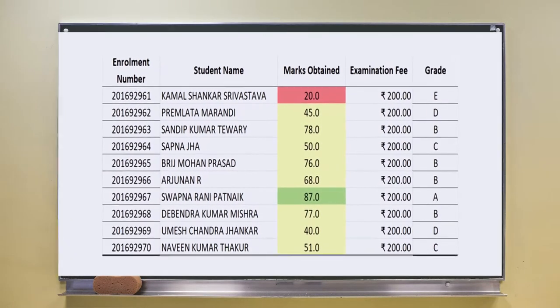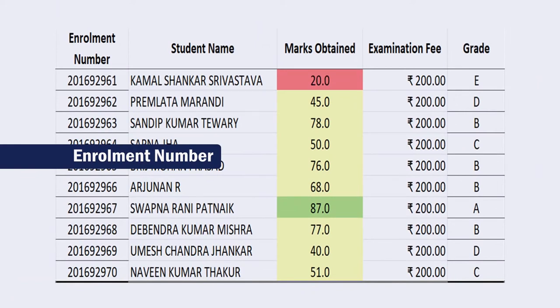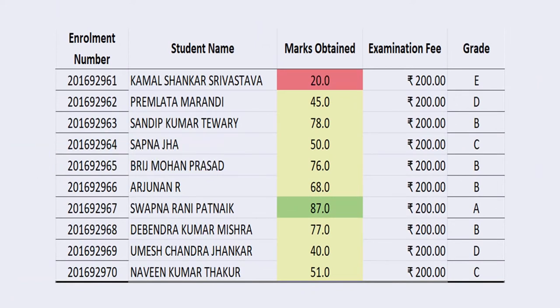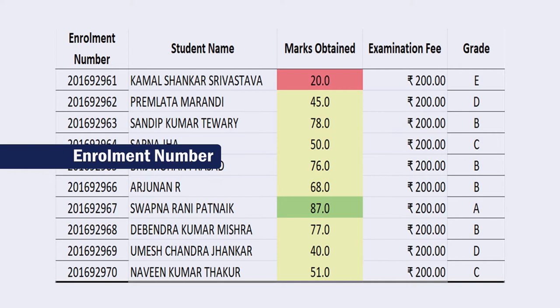We would like to define data with the help of an example — the student data which is being shown. Student data may consist of an enrollment number; each enrollment number is data about a student. The student name consists of characters — multiple alphabets make a student name. Student name is another piece of data consisting of characters. Enrollment number may be numerical data, or it can be character data — for example, 201692961, each digit can also be represented as ASCII characters.